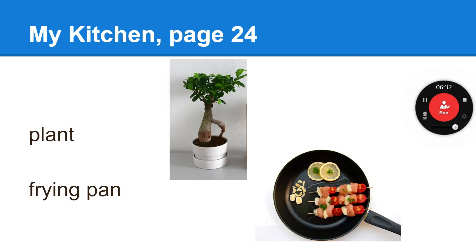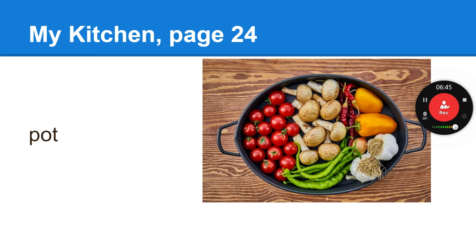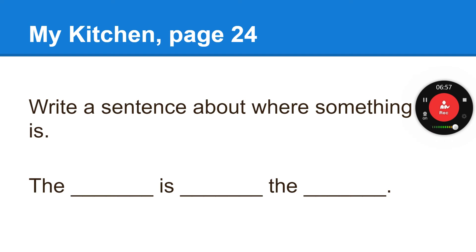My kitchen — page 24. Plant. Frying pan. Pot. A pot is deeper and usually bigger than a frying pan. You're going to write a sentence about where something is — four sentences. First, you're going to take the things: there's a cup, a frying pan, a plant, a pot, a microwave, plates, forks, and a coffee maker. You're going to draw where you've put these things, where they are located. If you're going to sell your book back, you can put a piece of paper on top and draw on top.